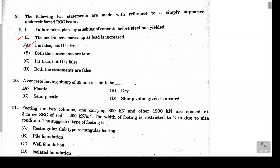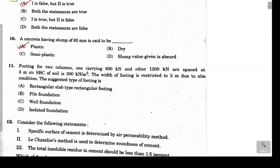Question 10 asks: if the slump of concrete is 65 mm, under which category is it classified? A slump of 65 mm falls under the plastic concrete category. Option A is the correct answer.